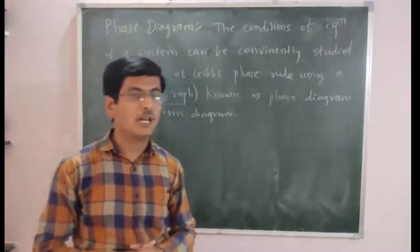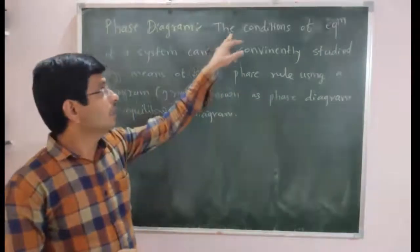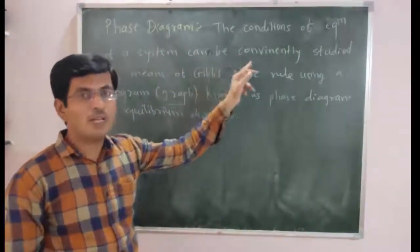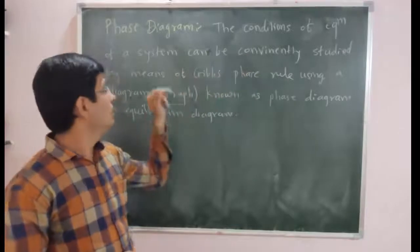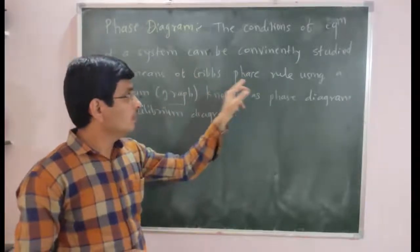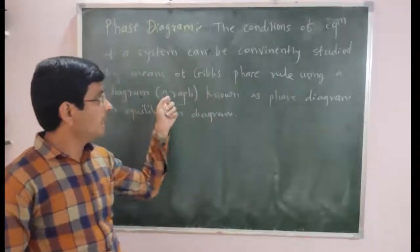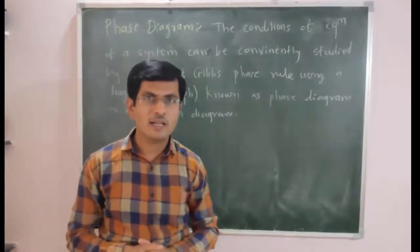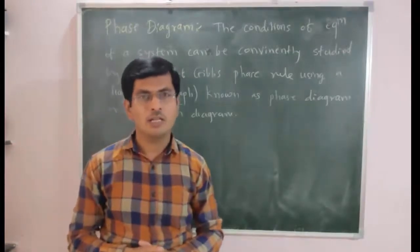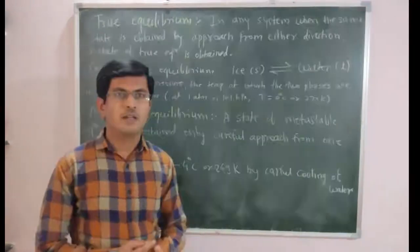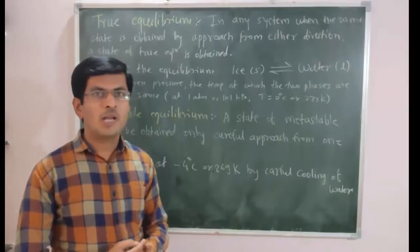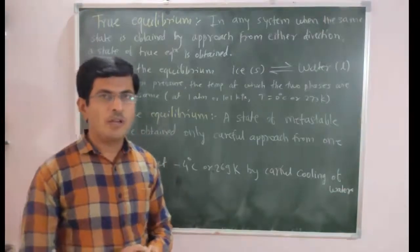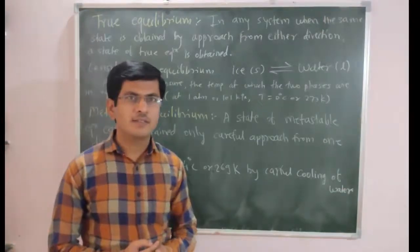Phase diagram: the conditions of equilibrium of a system can be conveniently studied by means of the phase rule using a diagram or graph known as a phase diagram or equilibrium diagram.